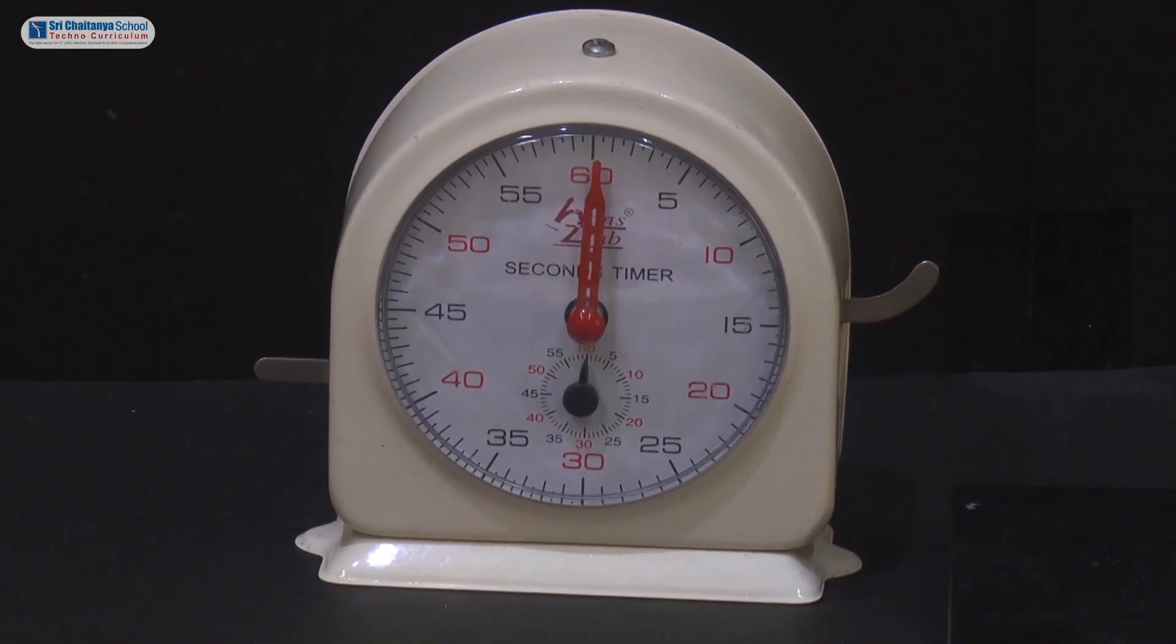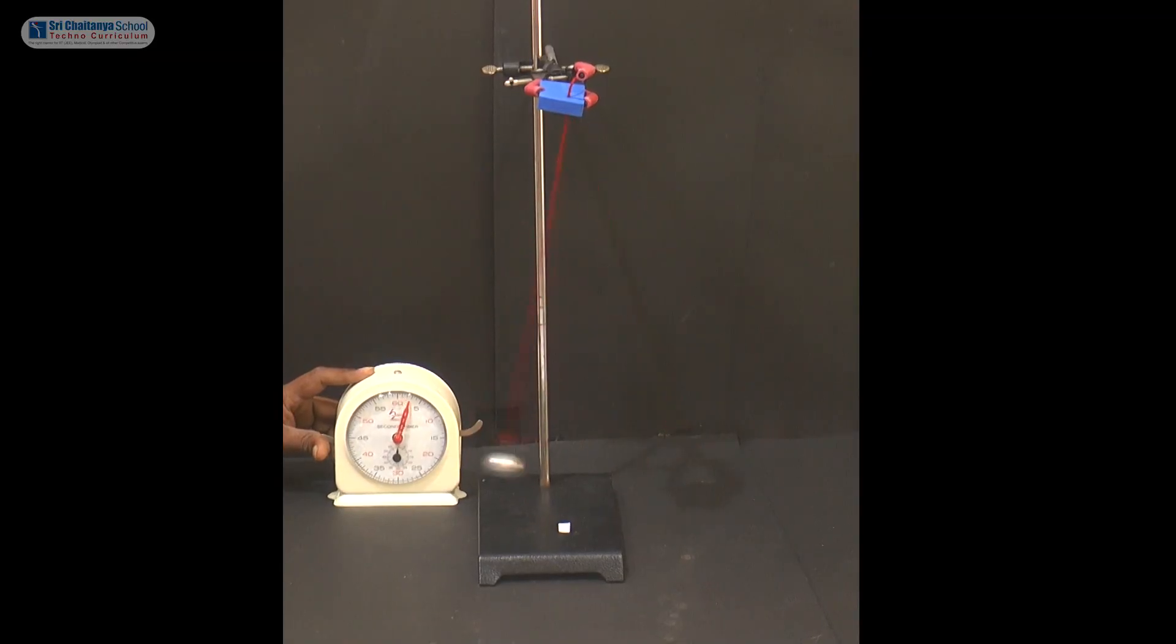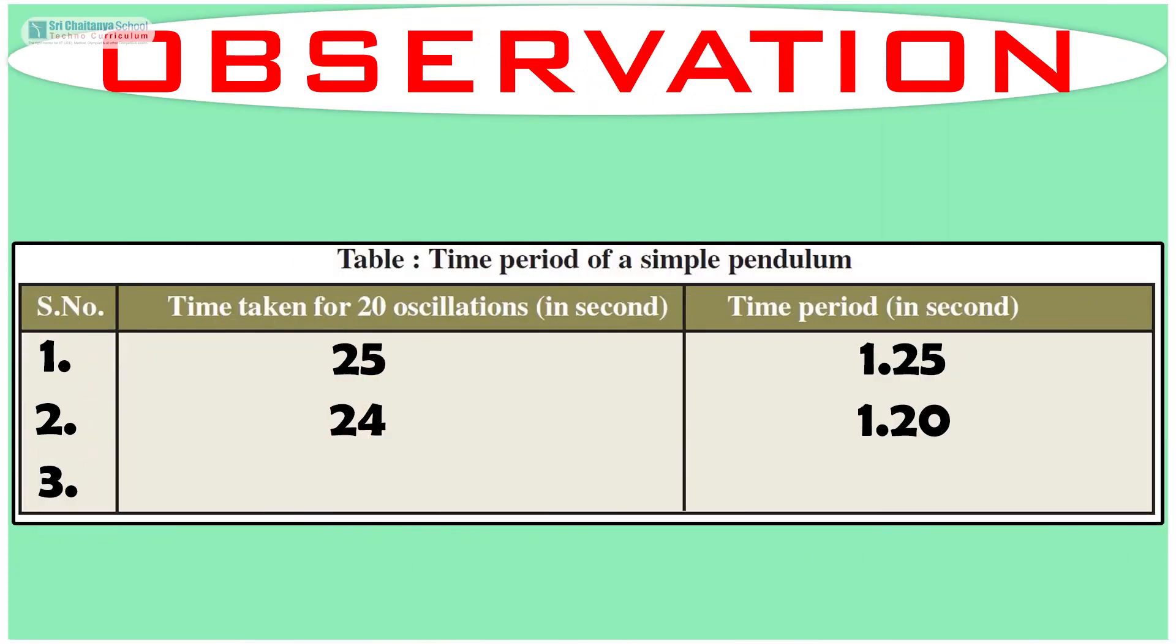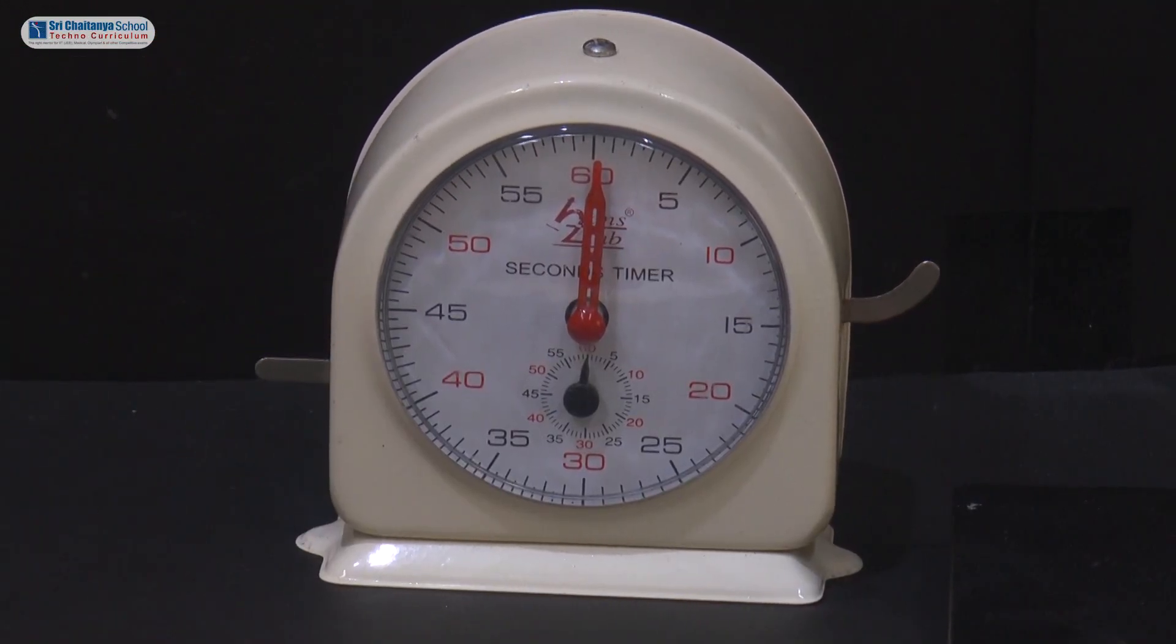And the second time taken for 20 oscillations is: 1, 2, 3, 4, 5, 6, 7, 8, 9, 10, 11, 12, 13, 14, 15, 16, 17, 18, 19, 20. The second time taken for 20 oscillations is 24 seconds and the time period is 1.20 seconds. And the third time taken for 20 oscillations.